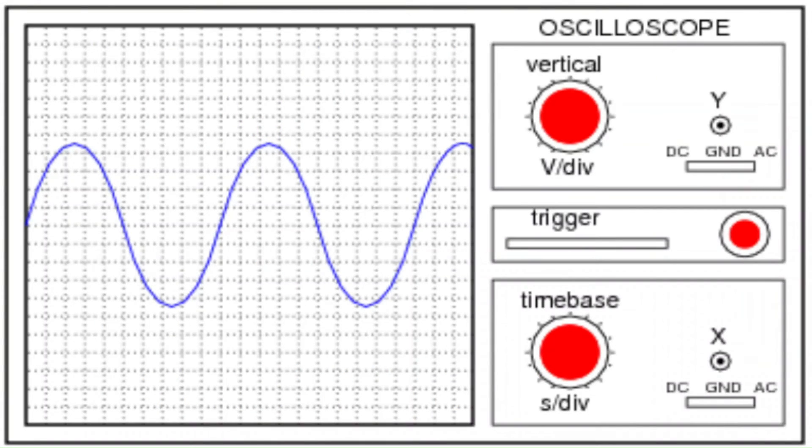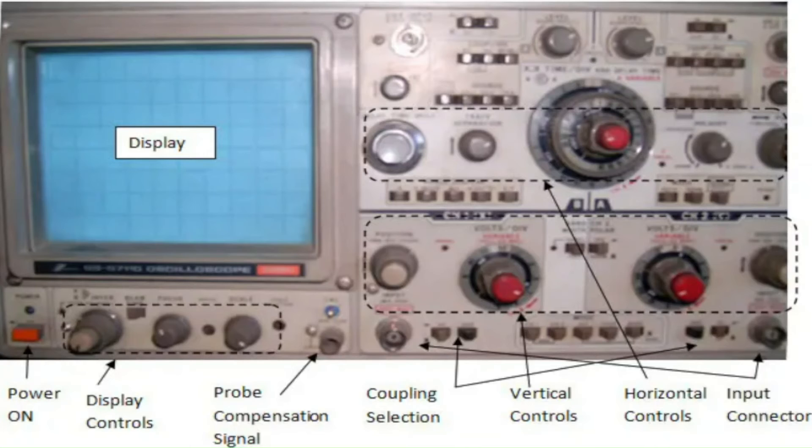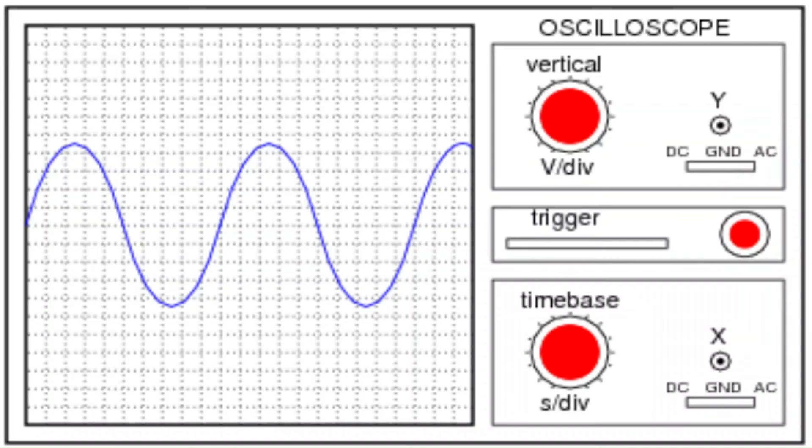The cathode ray oscilloscope consists of horizontal and vertical controls. The horizontal control is the time base, and the vertical control is the voltage gain. The Y gain is the voltage control, and the time base is the horizontal.